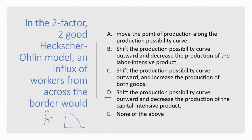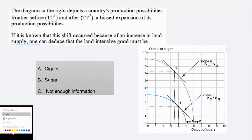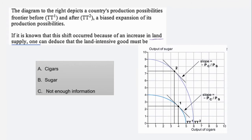The correct answer is D: labor is increasing. Given that prices have not changed, the good that uses labor intensively will increase, and the land or capital-intensive good's production will decrease. For the second question — increase in land, where sugar is land-intensive and cigars are intensive in the other factor — the answer is B.